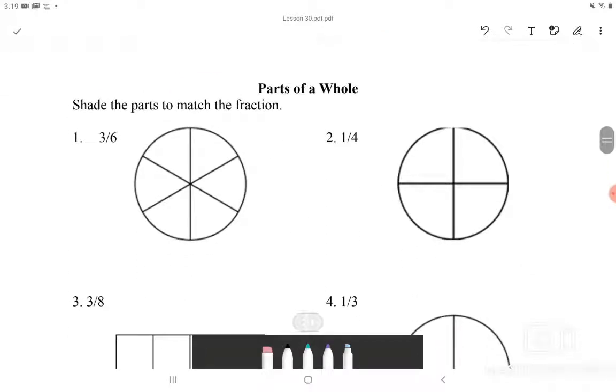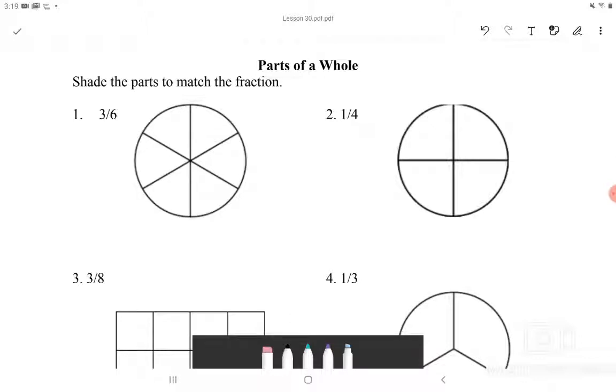Going over to the next section, it is part of a whole and we have to shade the parts to match the fraction. Number 1 says 3 over 6. The bottom number which is 6 tells how the shape, how the circle in this case is divided into. When we look at the circle, this circle is divided into 6 pieces. When you count them, what we have to do is shade 3 sections of them. I will shade this much. And this will match with 3 over 6 fraction.